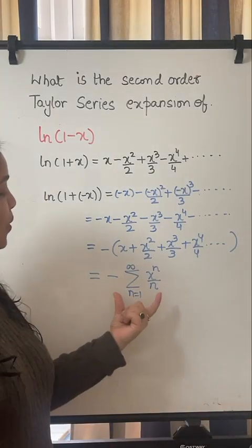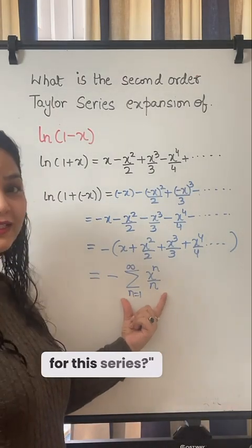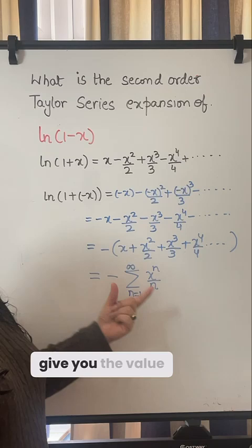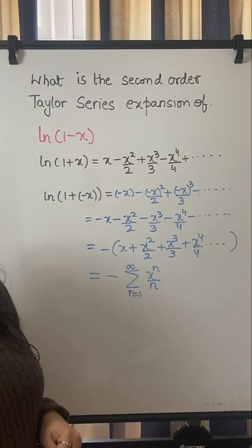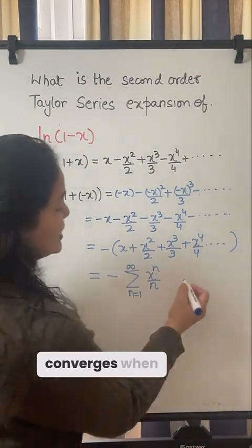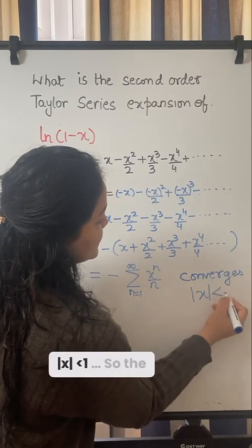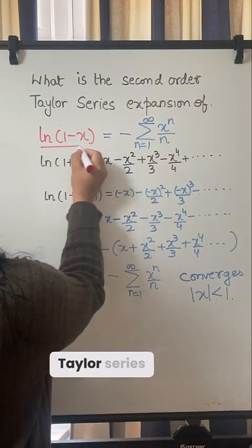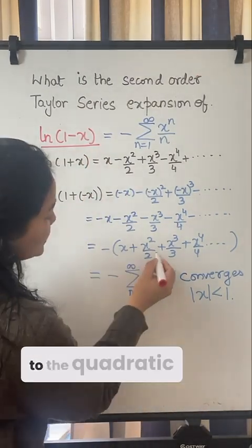If anyone asks you what is the value for this series, this series will give you the value log(1-x). And this series converges when mod x is less than 1. So the second order Taylor series expansion means that I will go to the quadratic part.